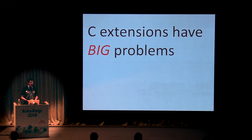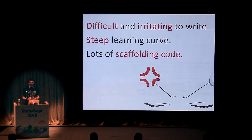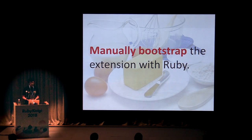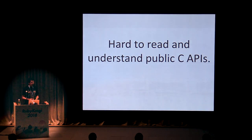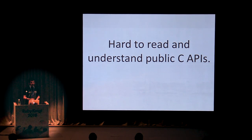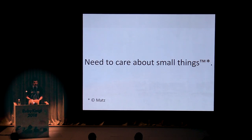The problem is that C extensions have some really big problems. They are very difficult and irritating to write — the learning curve is rather steep, and you need to write a lot of scaffolding code to get a simple C extension running. You also need to manually bootstrap this extension with Ruby and read a lot of documentation. It's also hard to read and understand public C APIs written for C extensions. If one gem has a C extension that another gem depends on, it becomes hard to expose this API in a public manner the way you are used to in object-oriented programming. As Matz says, we are Ruby-ish and we don't need to care about small things.